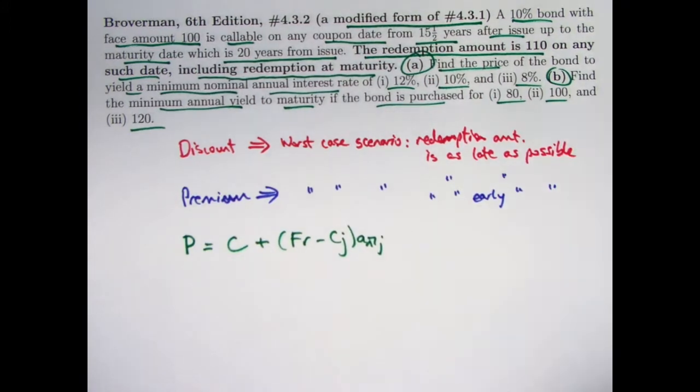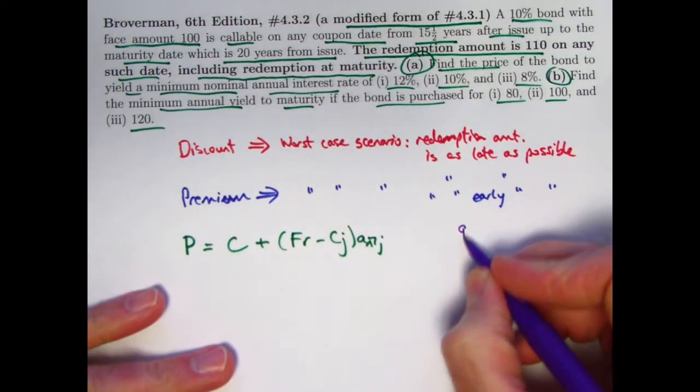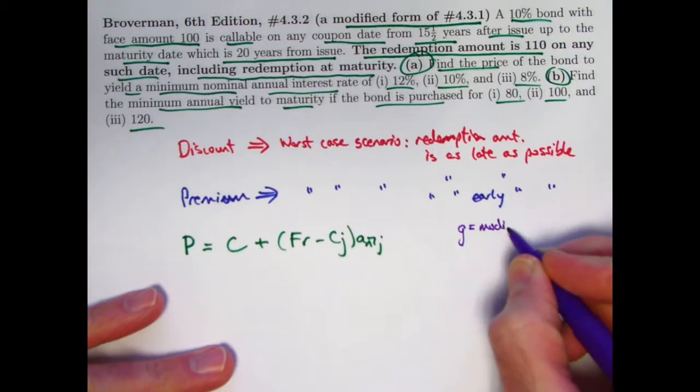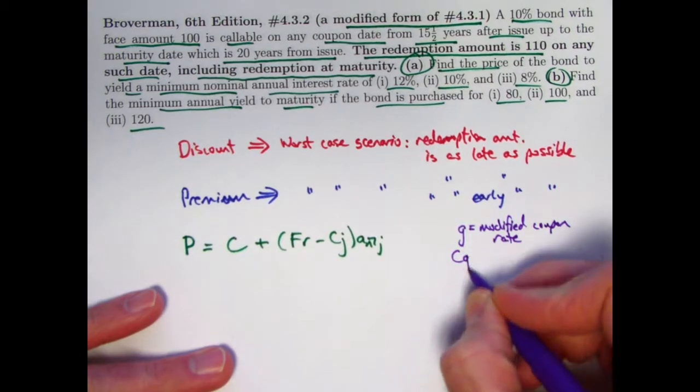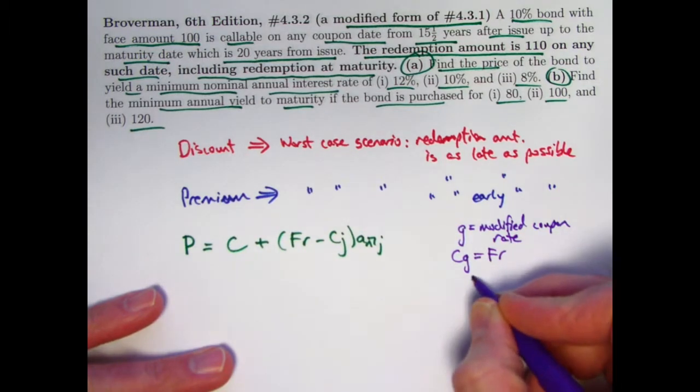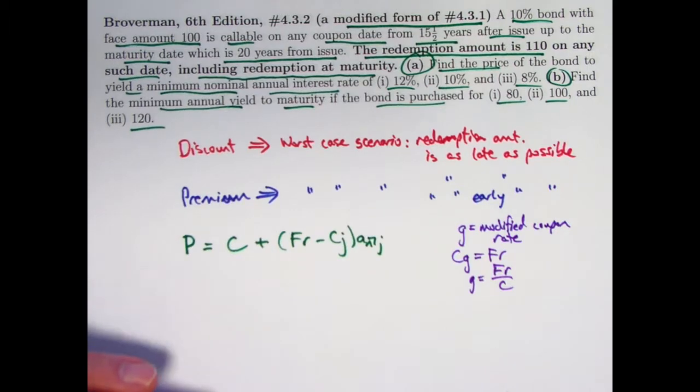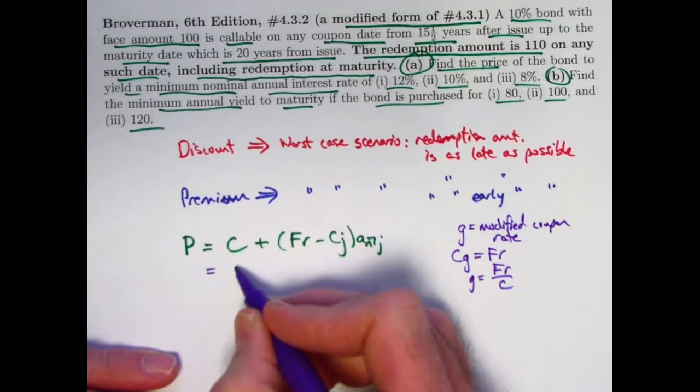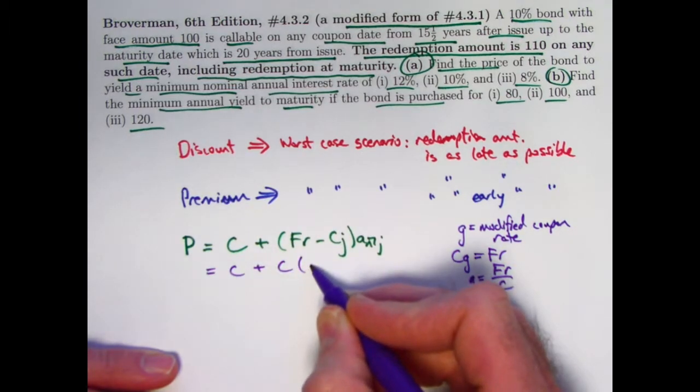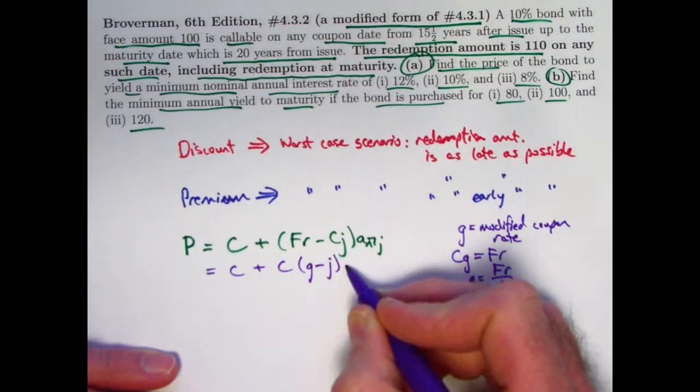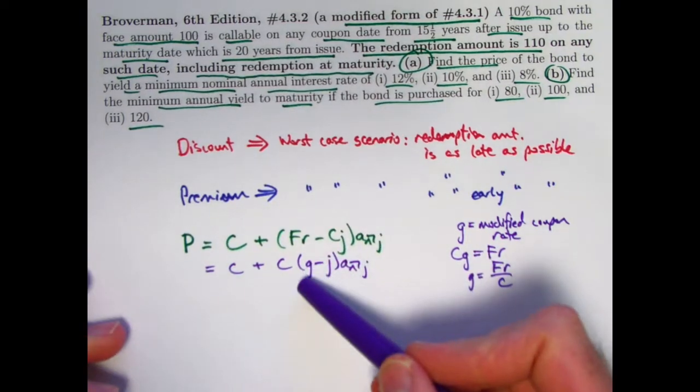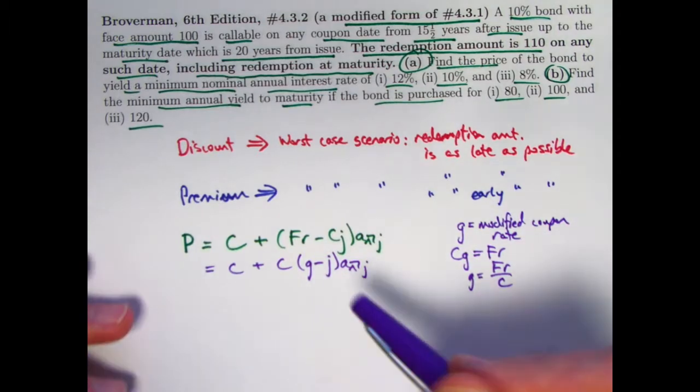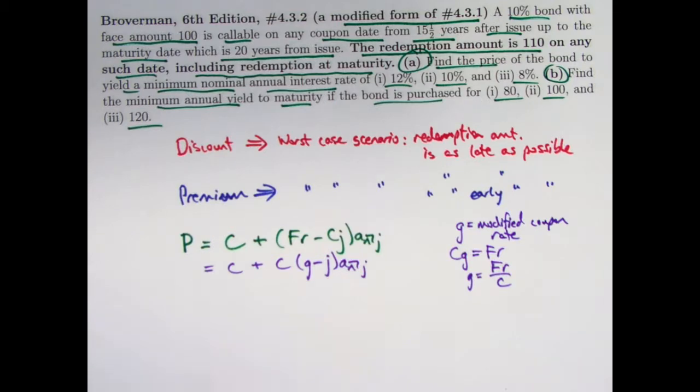However, in the general case, we can think in terms of the idea of the modified coupon rate. If g, little g is the common symbol used for the modified coupon rate, it is defined to be the rate such that c times g equals f times r. It gives you the amount of the coupon. So little g, in fact, is f times r over c. And if you go ahead and replace f times r with c times g, you can still factor the c out. And what you're left with is, in the parentheses, g minus j instead of r minus j. And so you can think about the premium discount formula in terms of whether you're buying at a discount, p is less than c and g minus j is negative, or at a premium, p is bigger than c and g minus j is positive.